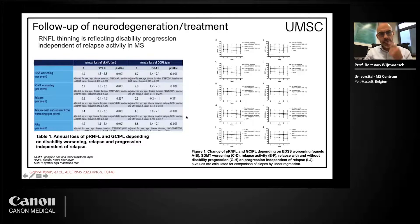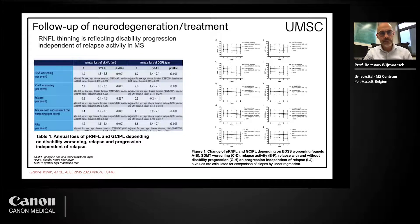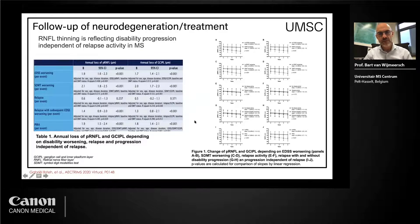What they did here is look at retinal nerve fiber layer and ganglion cell inner plexiform layers. PIRA is progression independent of relapse activity — that's what we want to detect: progression independent of relapses, pure neurodegeneration, detected before the patient really feels it. What you see is that patients who had no progression whatsoever were stable on their retinal nerve fiber layer or ganglion inner plexiform layer. But patients that did have progression outside of relapses showed a decline in thickness, which also correlates with EDSS worsening but not with relapses.